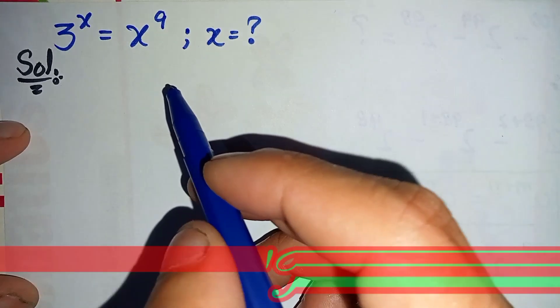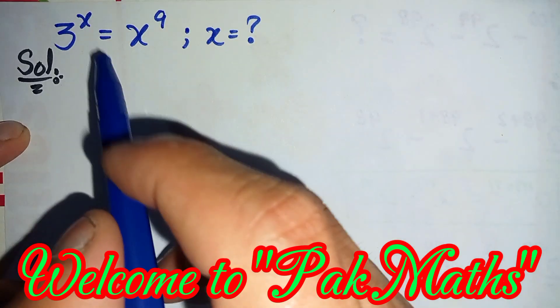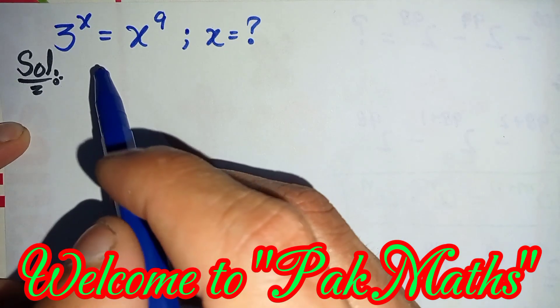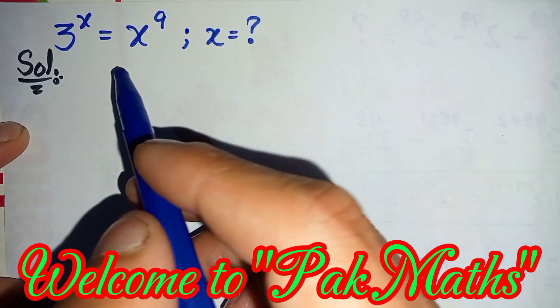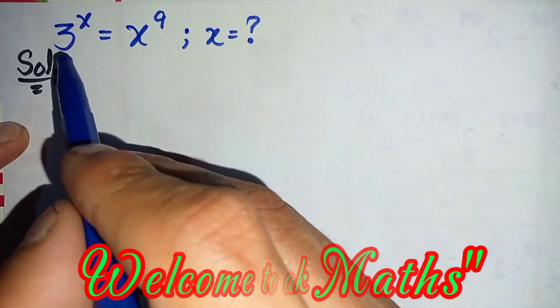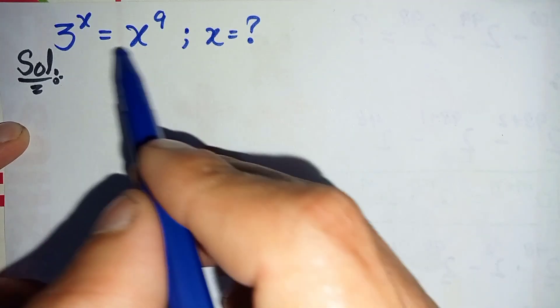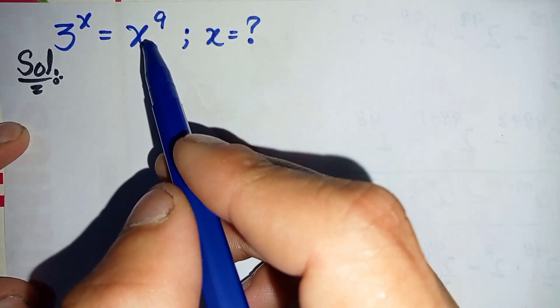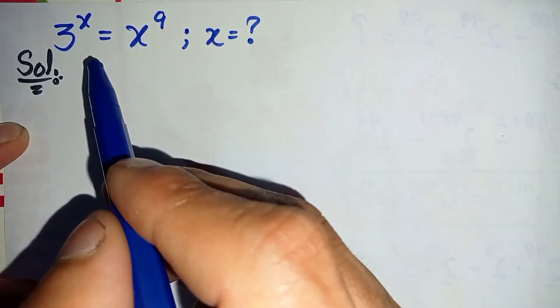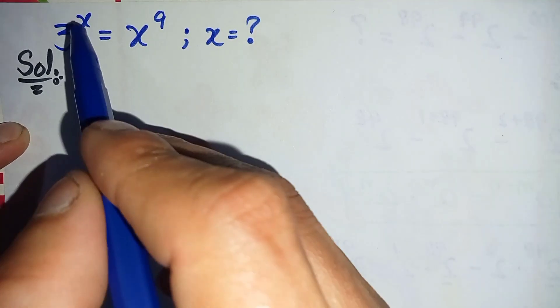Hi everyone, welcome to Parkman's. In this video I'm going to solve this nice exponential equation which is 3 raised to power x is equal to x raised to power 9.